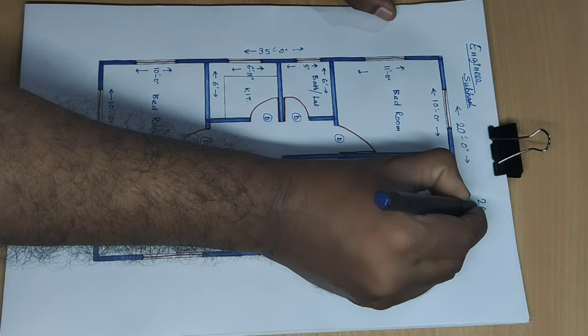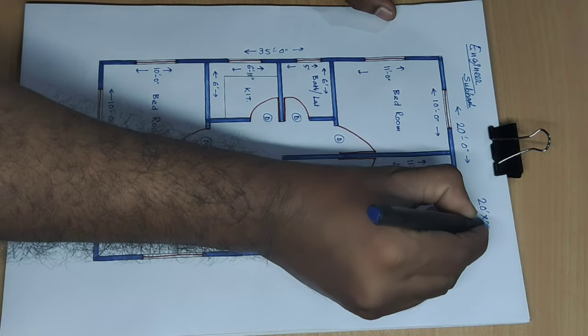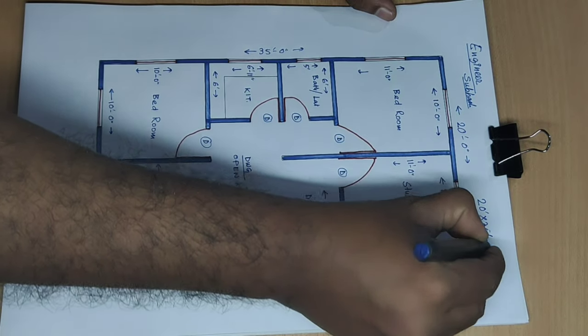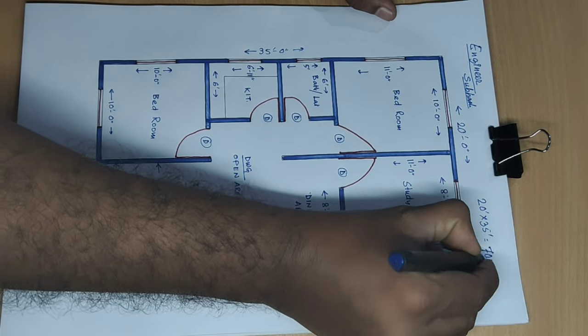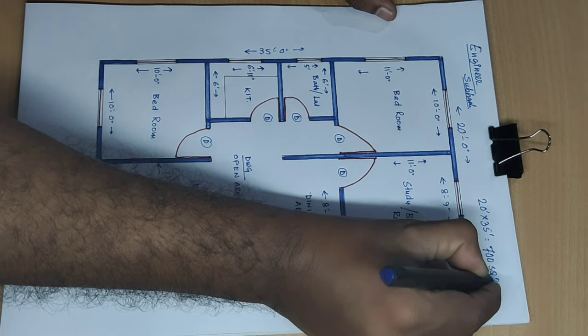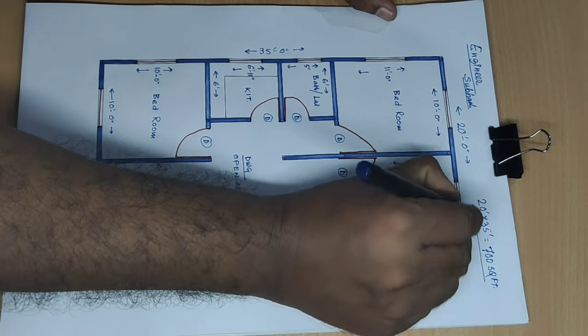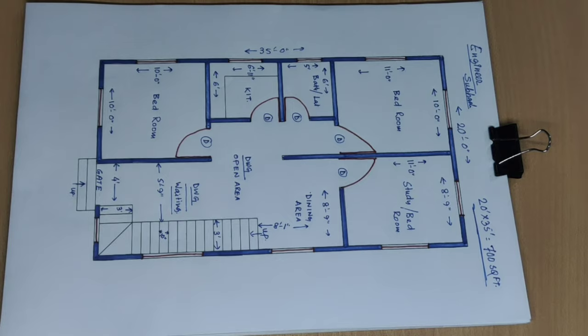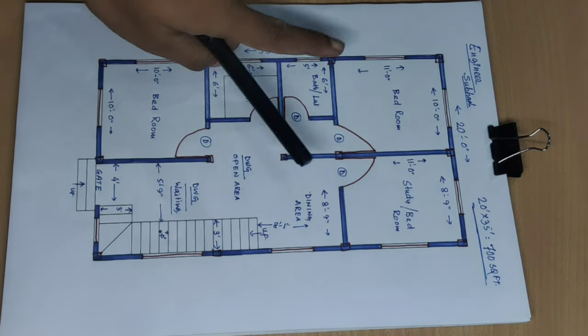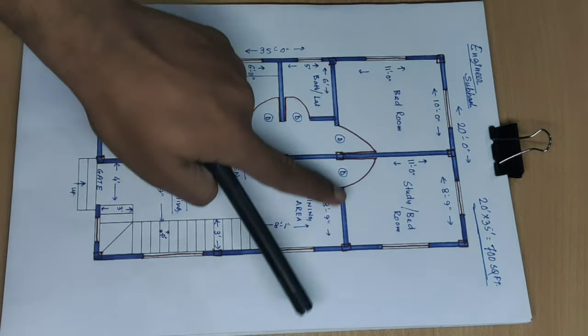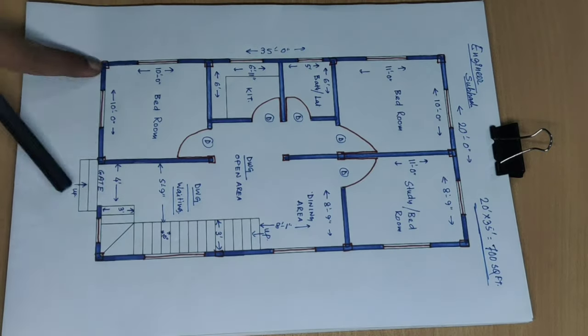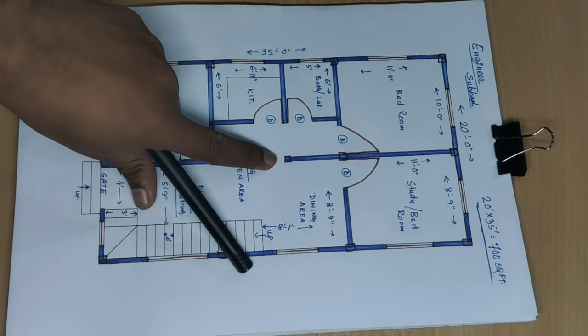20 feet into 35 feet equals 700 square feet house plan. Columns: 1, 2, 3, 4, 5, 6, 7, 8, 9, 10, 11, 12, and extra column.